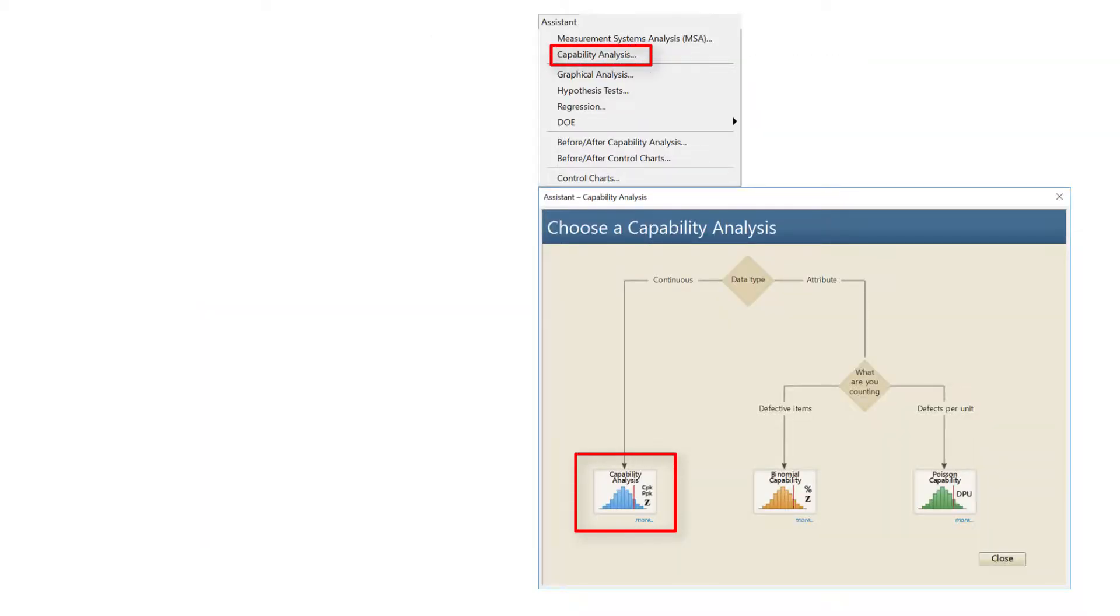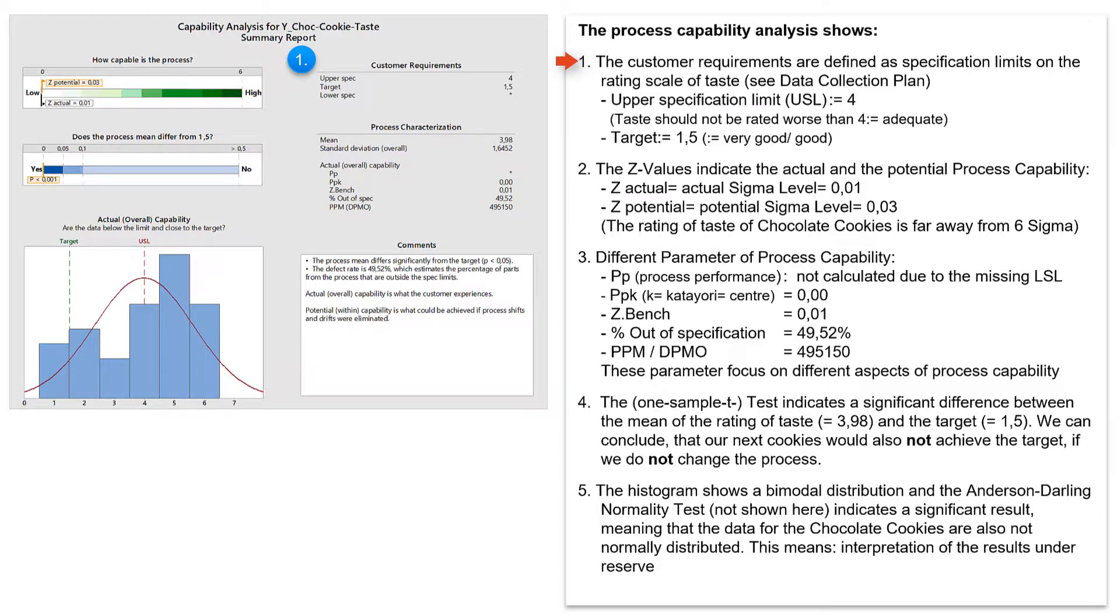The results of the MINITAB Assistant capability analysis first show again the previous entered upper specification limit and the target value from the data collection plan. A lower specification limit is not necessary in our case, as we only fear ratings greater than 4. And we would be happy if all customers would rate our cookies with a 1, which means very good and determines the lower limit of our scale.